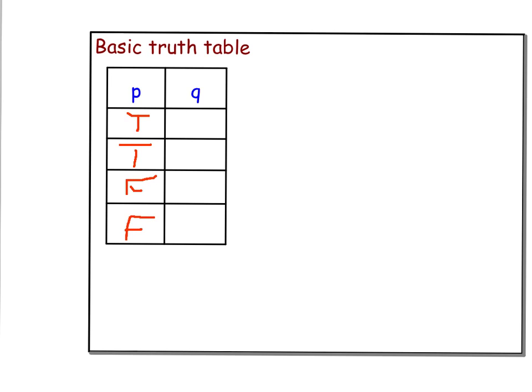Then for the second statement, you'll always set it up true, then false, alternating true and false. That's how you set up a basic truth table.